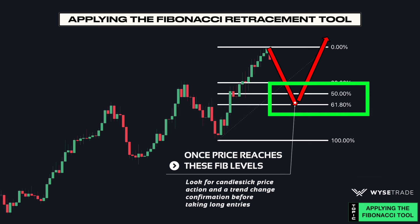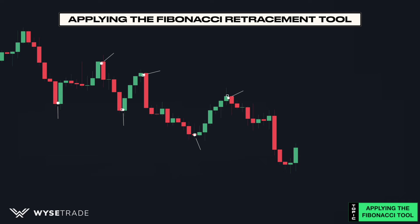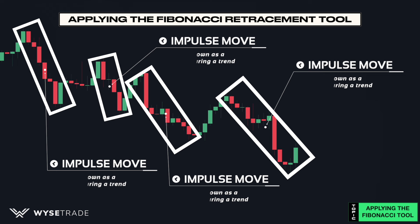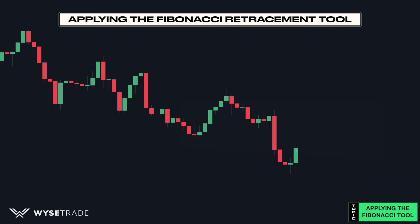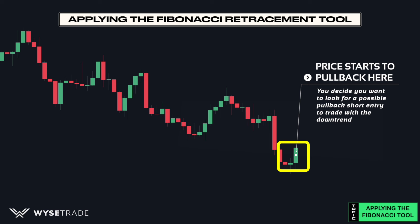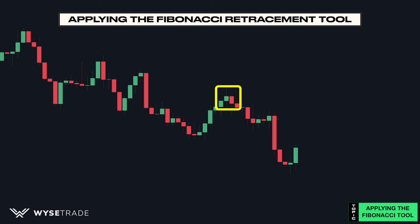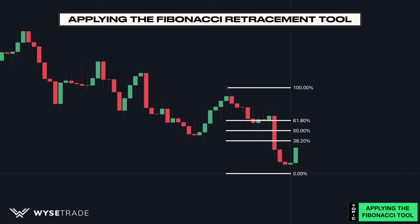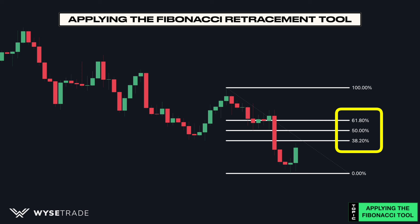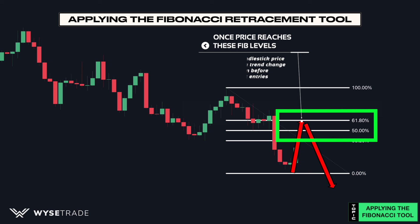Going in the opposite direction in a downtrend, you have lower highs and lower lows. The runs are your impulse moves and the pullbacks are your corrective moves. When price starts pulling back, take your Fibonacci tool, click at the recent swing high, drag it down to the recent swing low, move it a bit to the right, and click again to lock it in. Once price reaches any of these Fibonacci levels, look for candlestick price action followed by a trend change confirmation before taking a short entry.